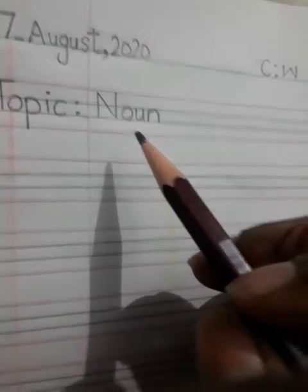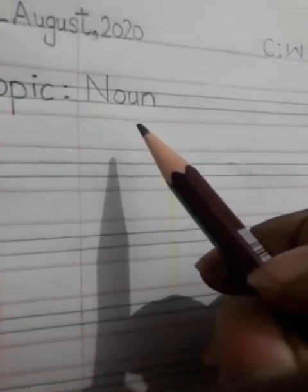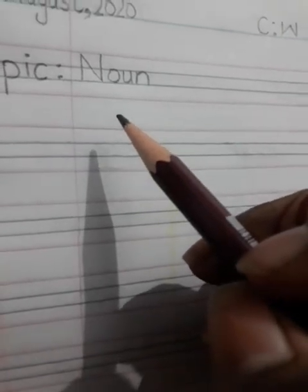In simple language, kisi bhi cheez ke naam ko noun kehte hain. For example, what is this? This is a pencil. What am I writing on? This is paper. So these things have names — paper and pencil — and those names are nouns.